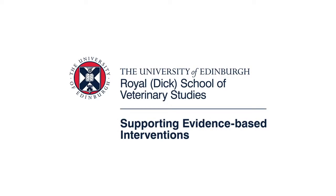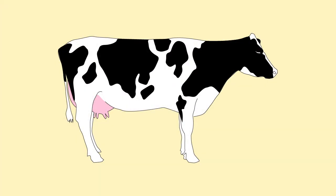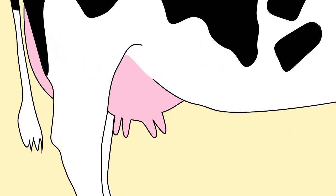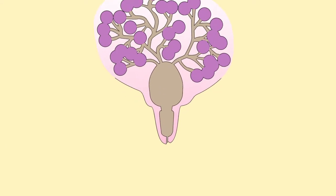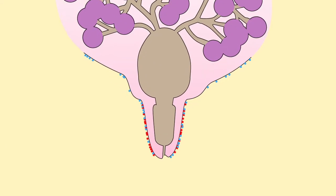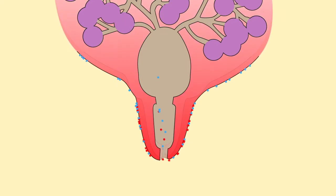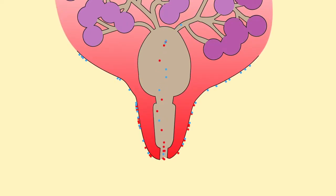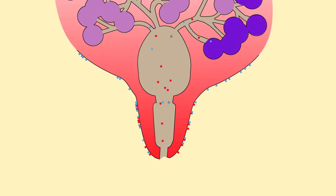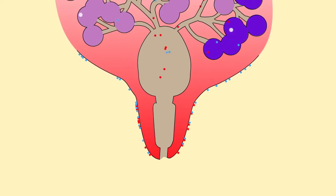Welcome to this series on Mastitis in Dairy Cows brought to you by the University of Edinburgh. This video is on Dry Cow Therapy. Mastitis is the infection of the milk producing gland, the udder. Bacteria invade the tit end via the tit canal and cause an infection. Mastitis is a fight between bacteria invading the udder and the cow fighting the infection.